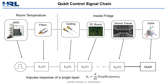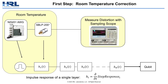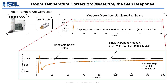As a first step in correcting for this, we can look at our waveform generator and some room temperature filters, and we can measure distortion using a sampling scope. At the top of this slide is a normalized step response of a programmed AWG step passing through our room temperature filters. Zooming in, you can see two notable characteristics: first, some spiking transients that occur on timescales of around 50 nanoseconds, and also a single exponential decay following that with a timescale of around 420 nanoseconds.